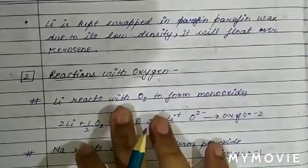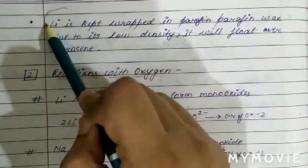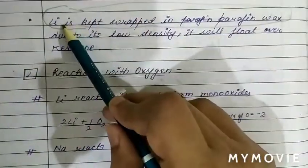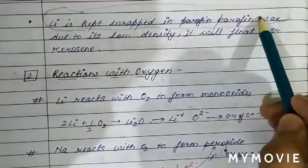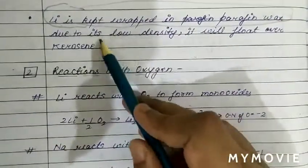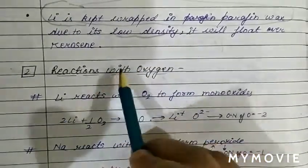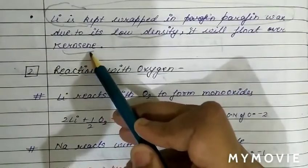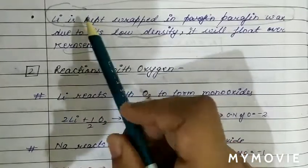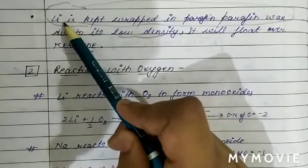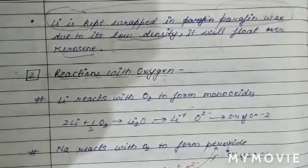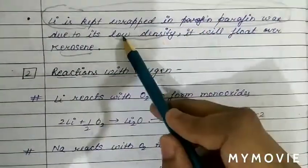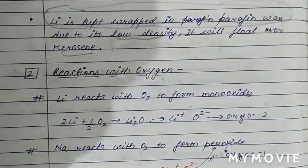Alkali metals are kept in kerosene oil, but lithium is kept wrapped in paraffin wax instead. Lithium is not immersed in kerosene oil because of its low density — lithium starts floating over kerosene oil and may catch fire when it comes in contact with air. Therefore, instead of dipping lithium in kerosene oil, it is wrapped in paraffin wax.